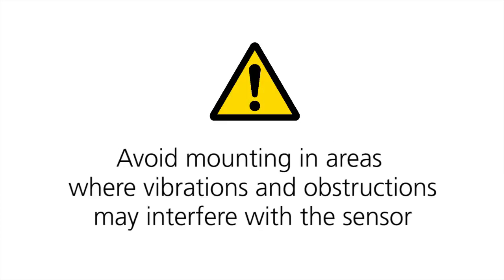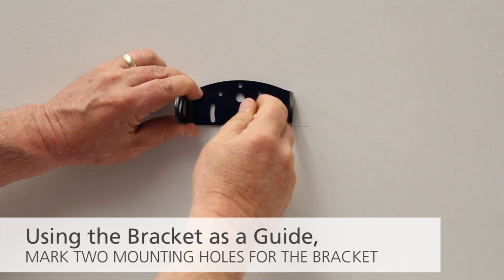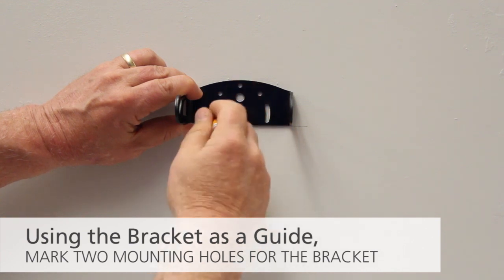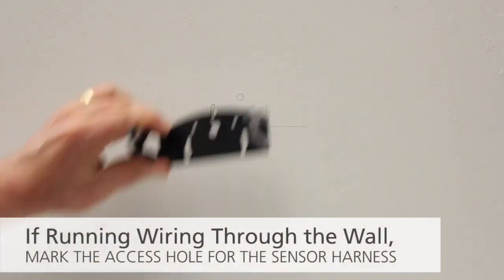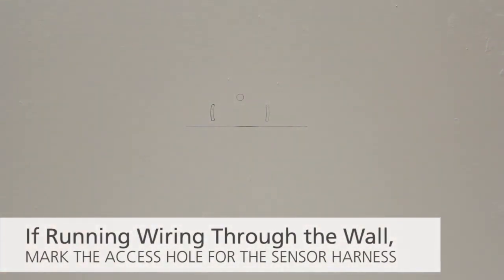Avoid mounting in areas where vibrations and obstructions may interfere with the sensor. Using the bracket as a guide, mark two mounting holes for the bracket. If running wire through the wall, mark the access hole for the sensor harness.